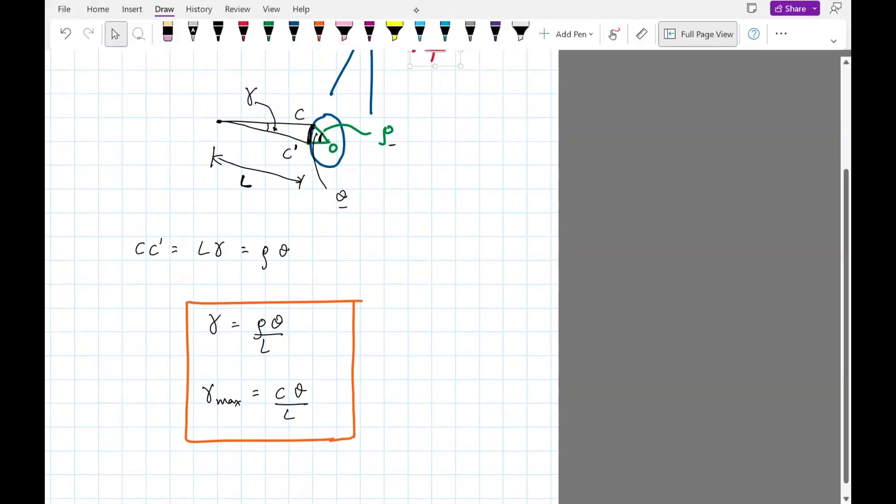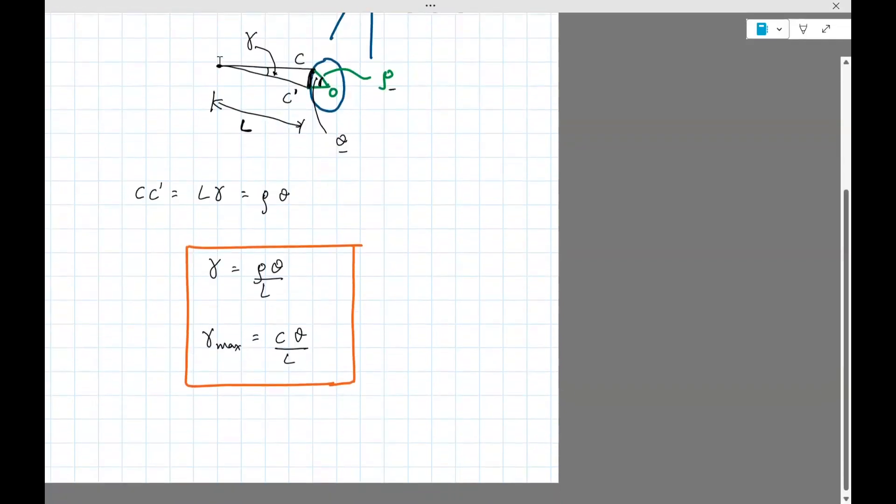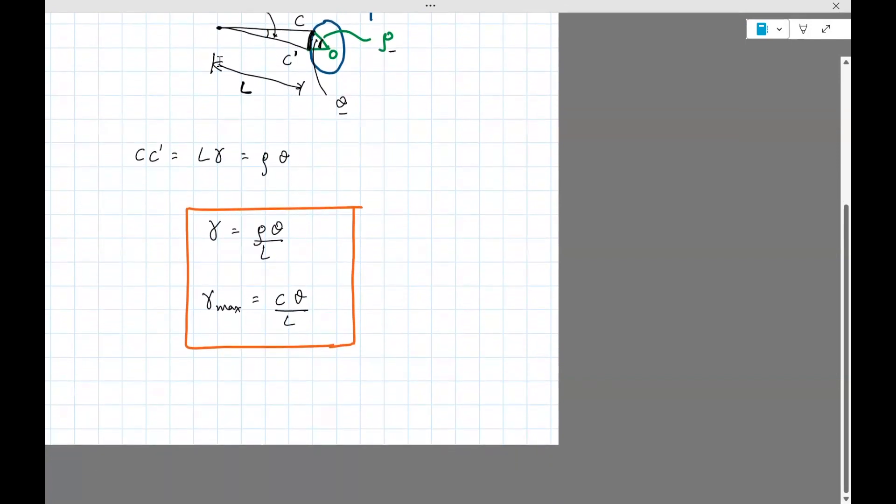Okay, so let me just give you definitions of these terms. Gamma is the shear strain. Theta is called the angle of twist. Rho and C are the radius.